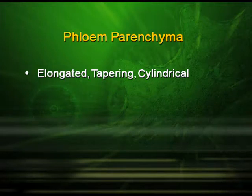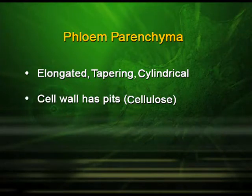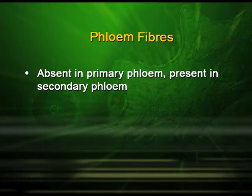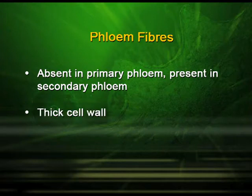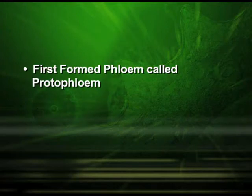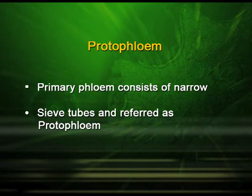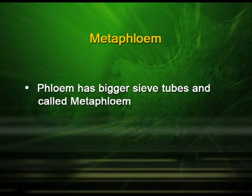Phloem parenchyma cells are elongated, tapering, and cylindrical. The cell wall has pits and is made up of cellulose; their function is to store food, resin, and latex. Phloem fibers are sclerenchymatic cells, absent in primary phloem but present in secondary phloem, and they have a thick cell wall. The first-formed phloem is called protophloem, consisting of narrow sieve tubes, while phloem with bigger sieve tubes is called metaphloem.